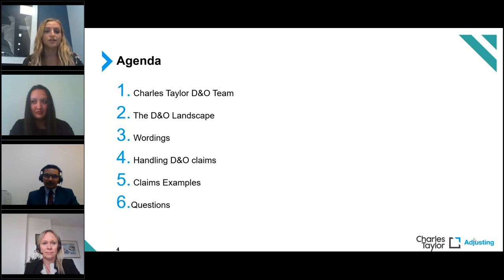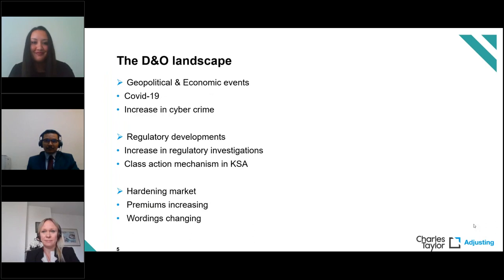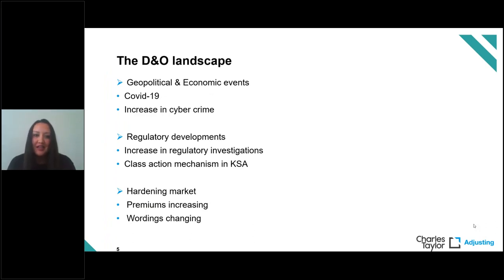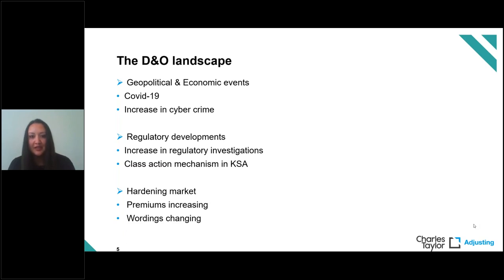Historically, there has been less take-up for D&O insurance in the Middle East compared to other regions. This has traditionally been influenced by the litigation environment, as well as the existence of large family-owned groups of businesses who have not necessarily seen the need to purchase cover. However, as a result of increasing regulation, an increase in litigation, and new geopolitical and economic factors, the need for D&O insurance in the region is increasing.